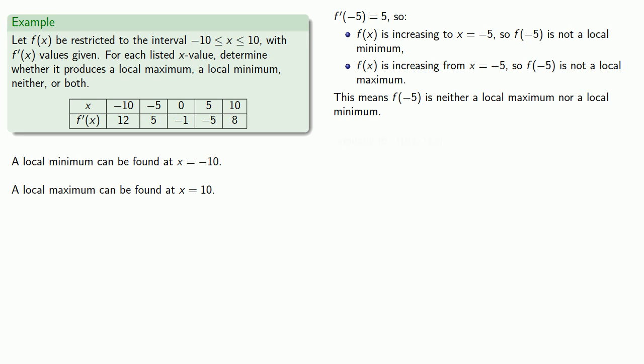And what this means is that f(negative 5) is neither a local maximum nor a local minimum. And a similar argument can be made for f(0) and f(5), and so neither maximum nor minimum values can be found in these other places.